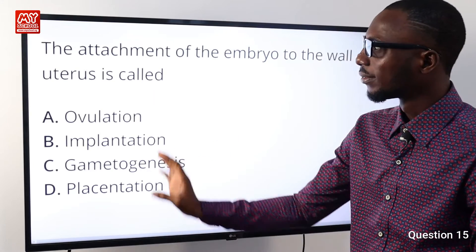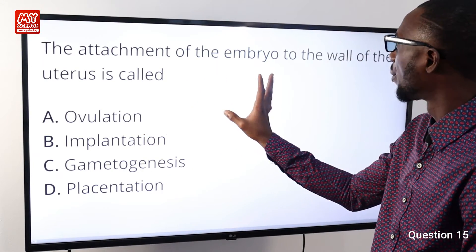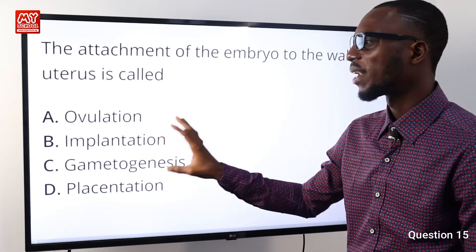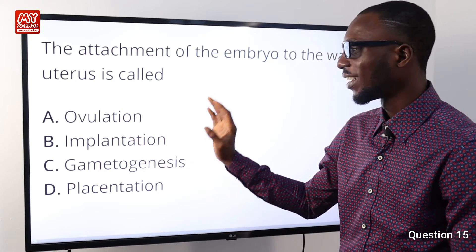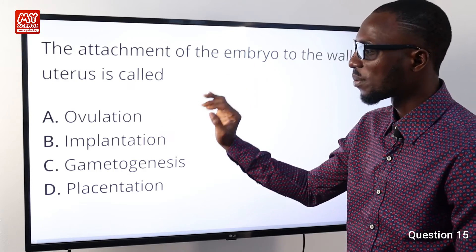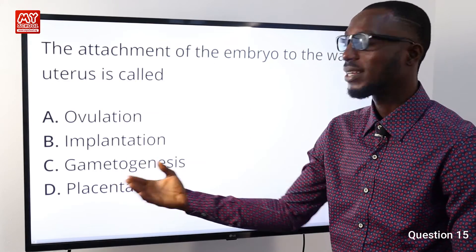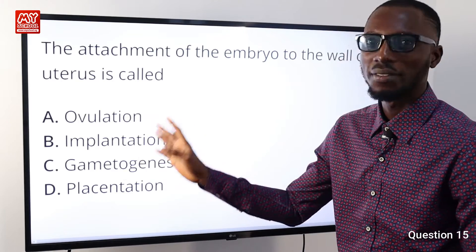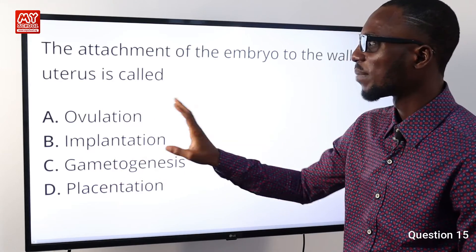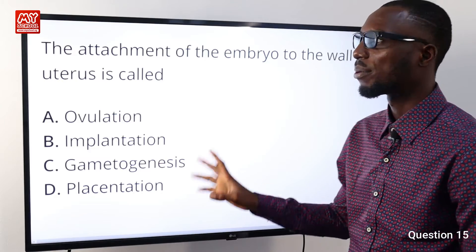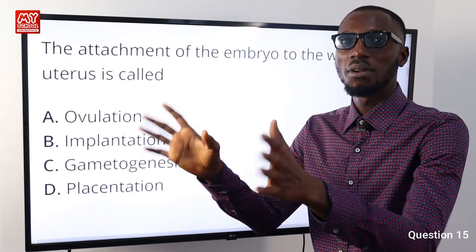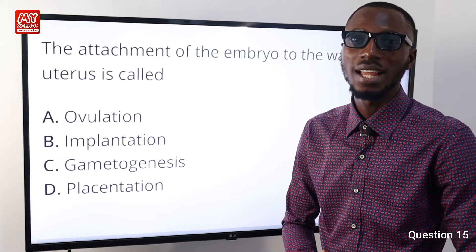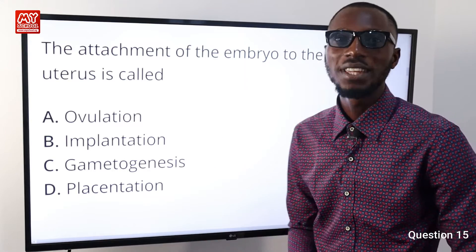Question number fifteen: the attachment of the embryo to the wall of the uterus is called what? That is definitely implantation. Option D, placentation, is the arrangement of ovules in the ovary — that is not it. Option B, implantation, is the attachment of the embryo to the wall of the uterus — popularly referred to as the womb. So option B is correct.